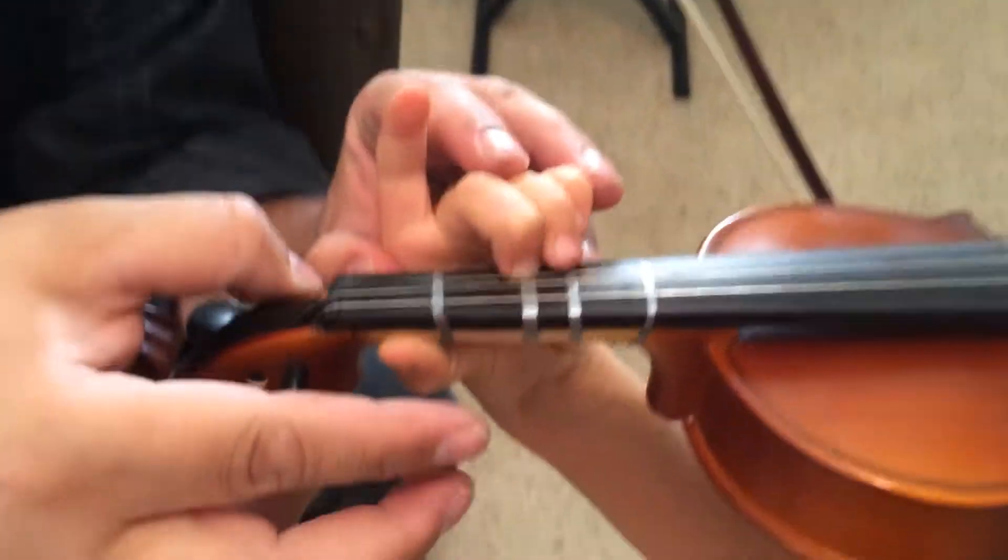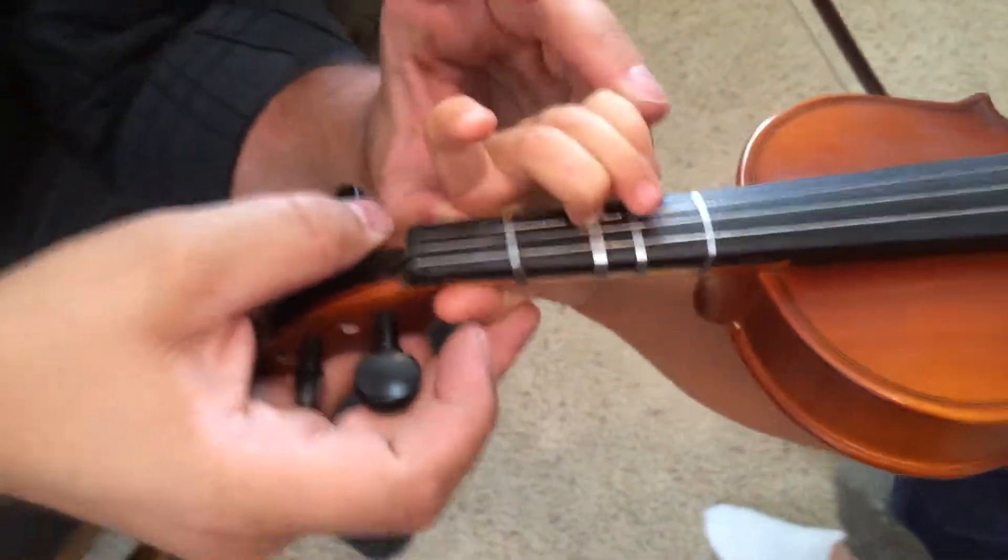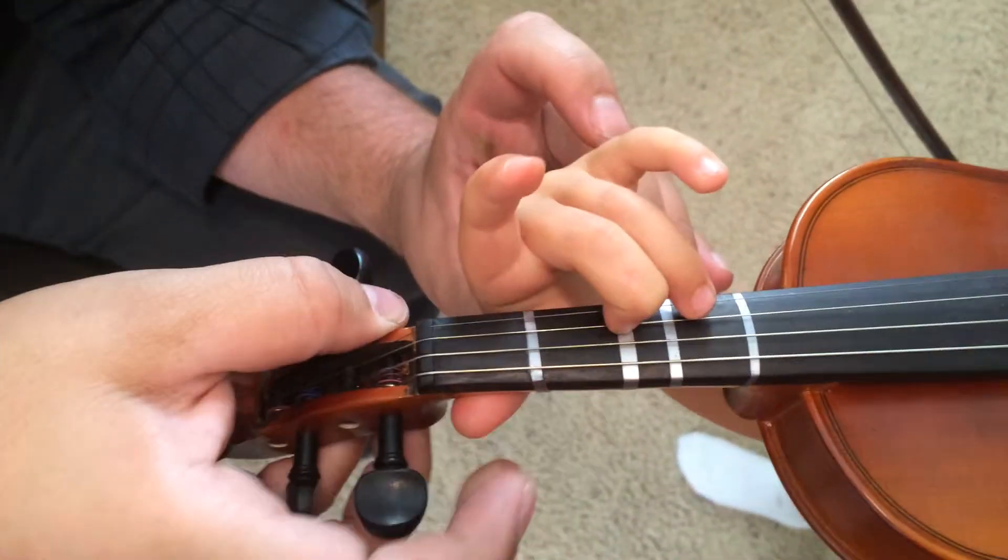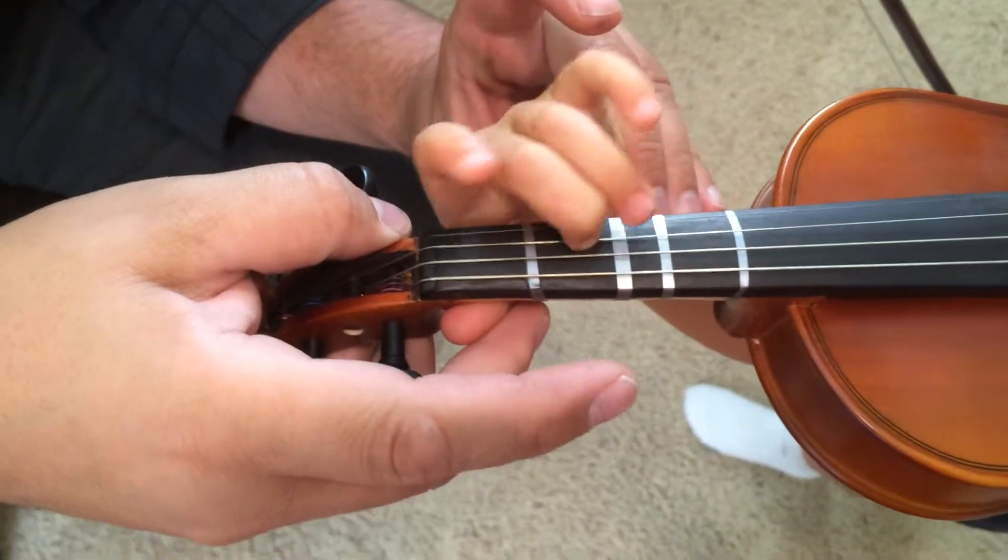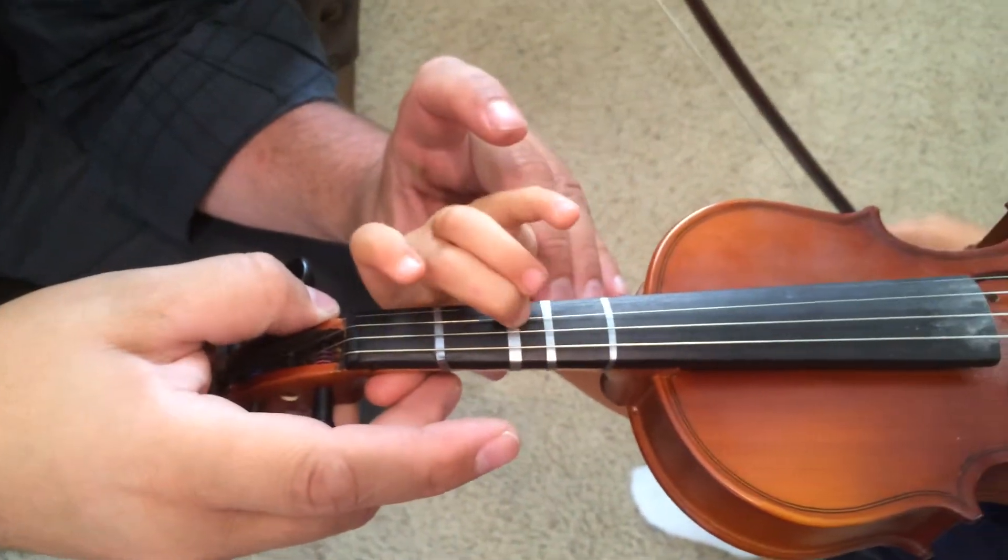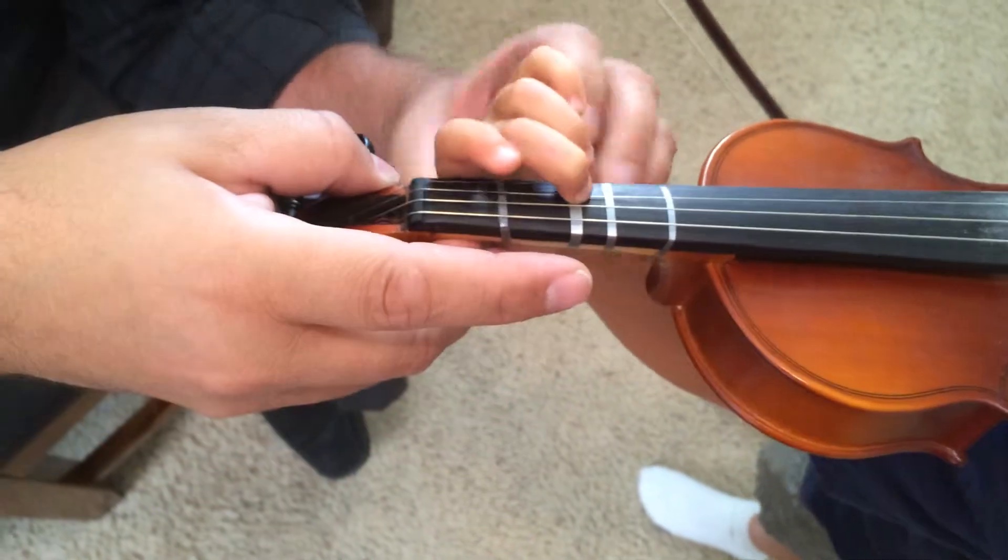You're going to pull this part of your hand away. Don't let this part of your hand touch the fingerboard and just glide up and back, up and back, up and back. Let your wrist push it, kind of like this, up and back, up and back.